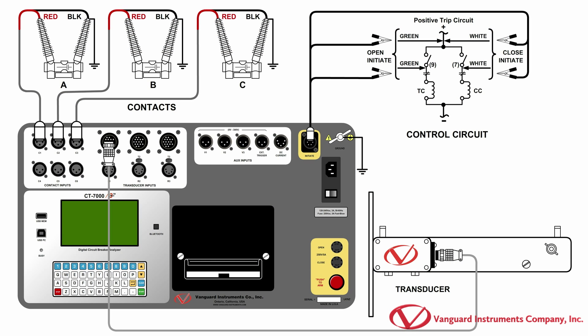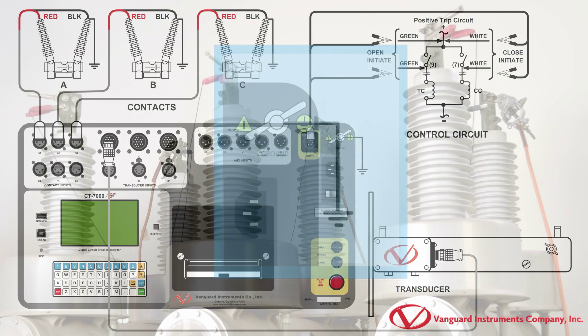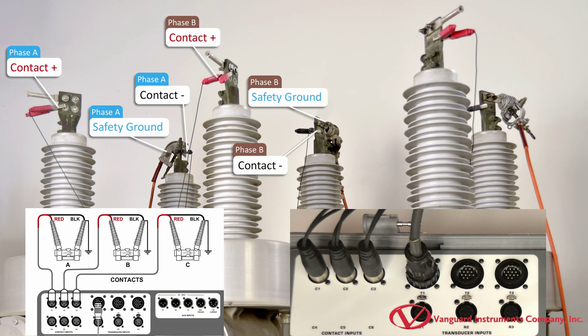We'll be making cable connections per the connection diagram shown here. First, start by connecting the CT7000 S3's ground terminal to the substation ground. Now, connect the contact and ground cables for each phase being tested as shown here.